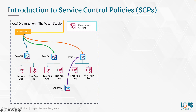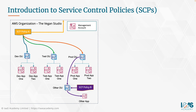A nested OU is obviously going to inherit the permissions defined in service control policy A. But there's nothing to stop you adding an additional policy directly to that OU. The resultant policy applied to that OU and any accounts within it is going to be where both service control policy A and service control policy B have a match. So if service control policy A denies you from using DynamoDB, but service control policy B says you can use DynamoDB, you're still going to be denied the ability to consume DynamoDB because service control policy A has an explicit deny for that service.